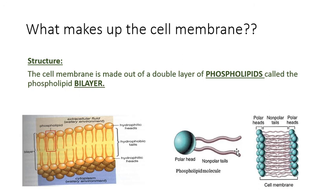Since we have that difference in polarity, the two-layer structure works best to keep things in and keep things out. The polar heads face outward as well as inward so water can come up to the barriers on both sides of the cell membrane, and the nonpolar tails face inward, creating that barrier. So: polar on the outside and inside, nonpolar in between.